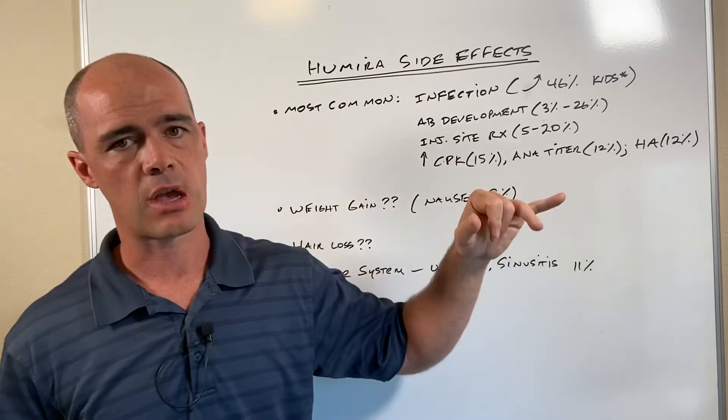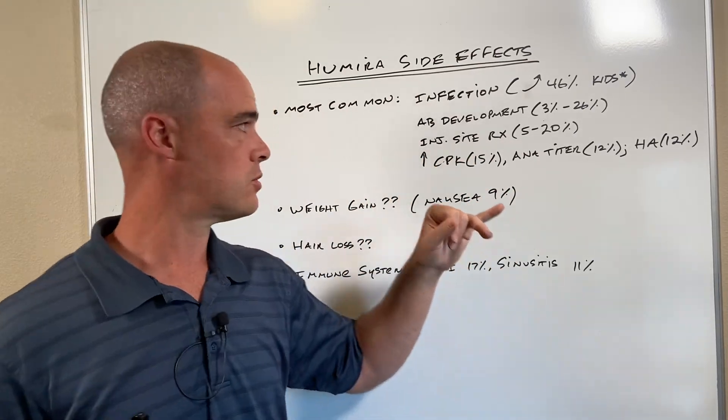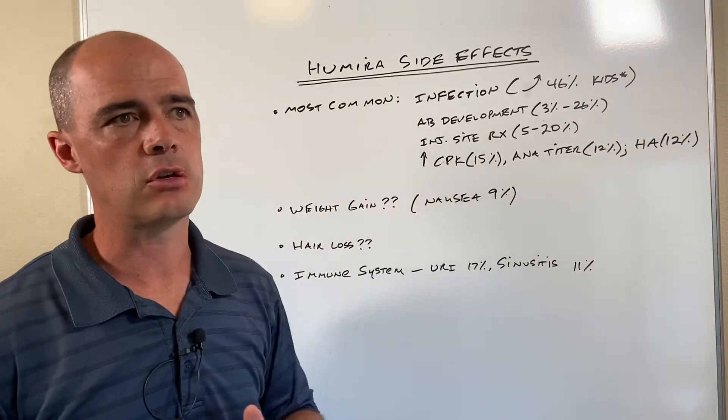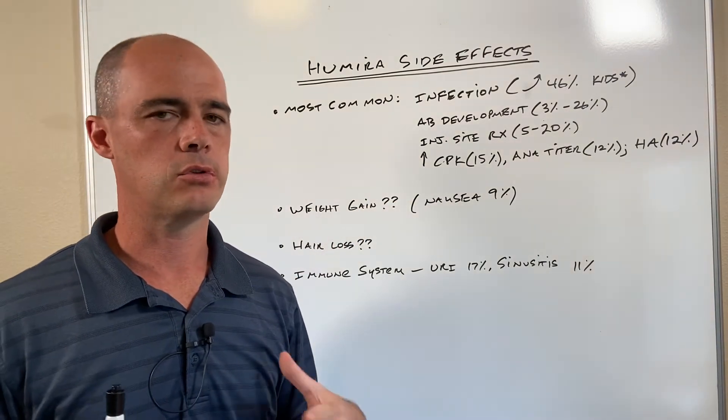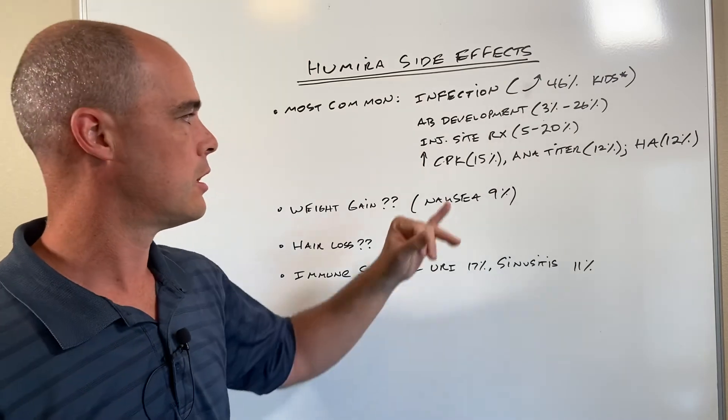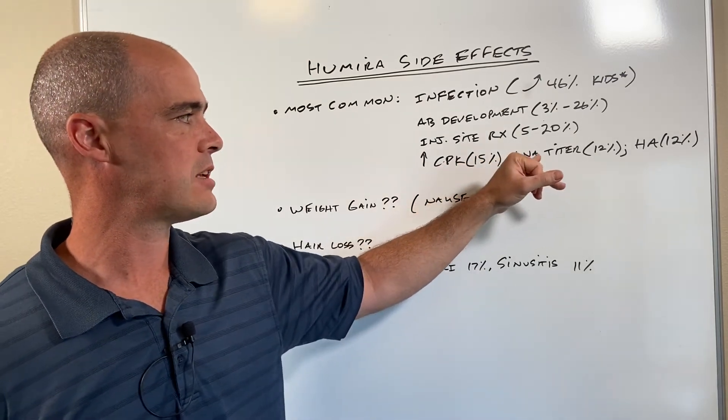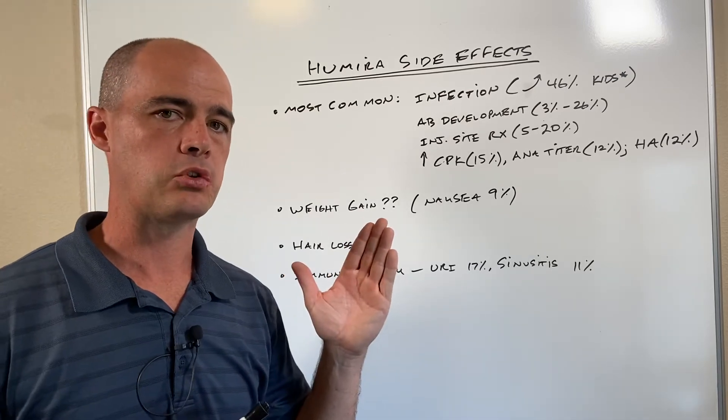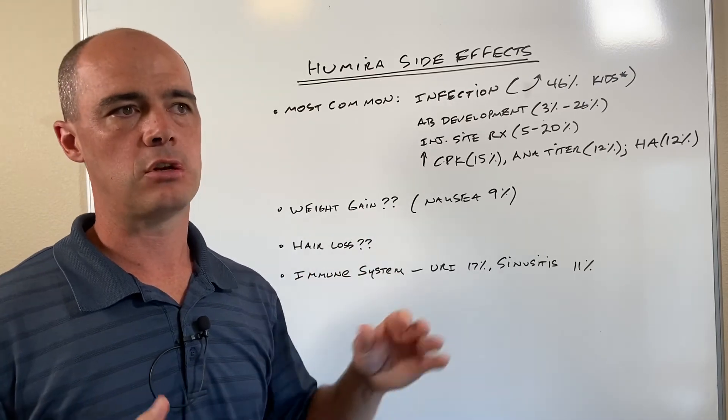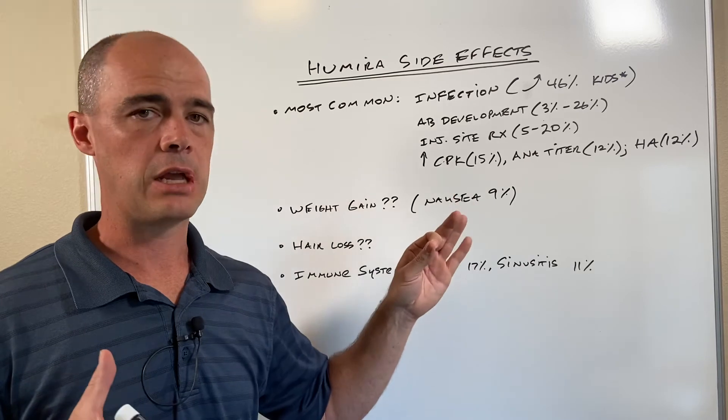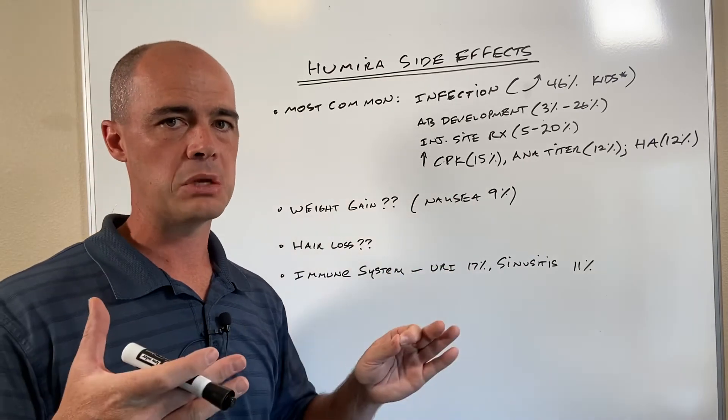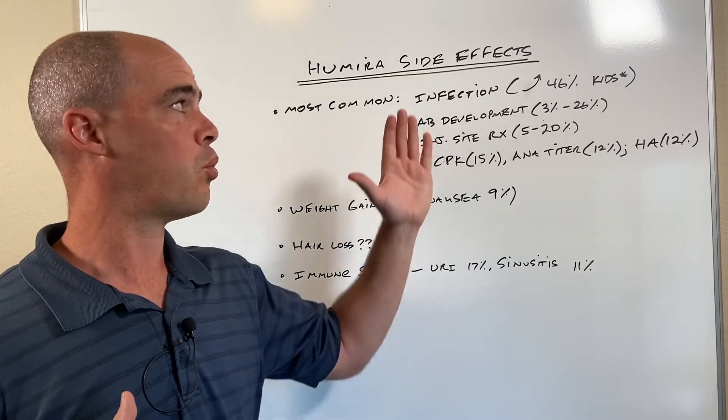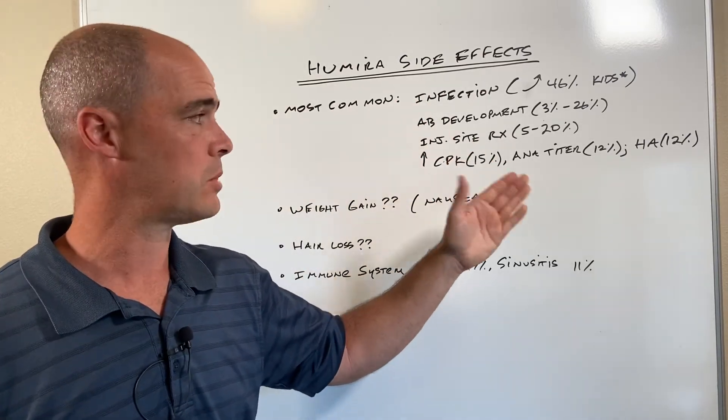And then we have some enzyme elevations. CPK is creatine phosphokinase. You can see this when there's, say, a muscle injury. The ANA titer, you'll see this bump up in about 12% of people. And that's concerning because it's one of the things that you see elevated in conditions like lupus. So it can throw your doctor off if they're not aware that you're taking Humira.